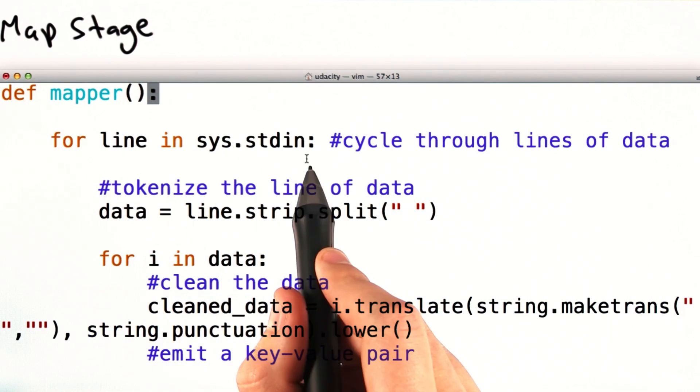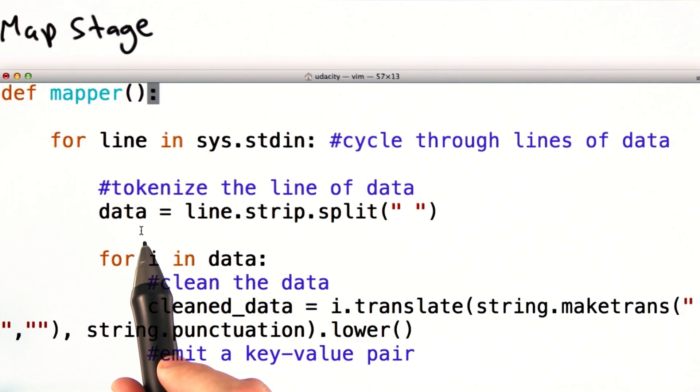The mapper takes in a document. For each line of the document, it creates an array consisting of the words in that line of text. We then cycle through the words. We clean each word up, so we remove any punctuation and make all the letters lowercase.